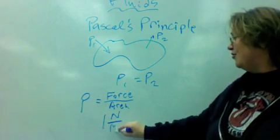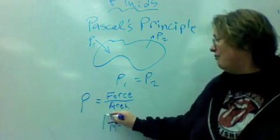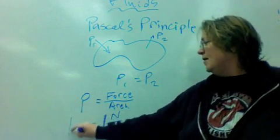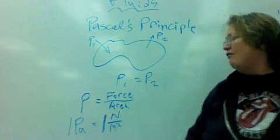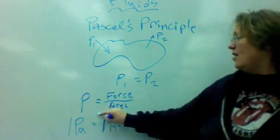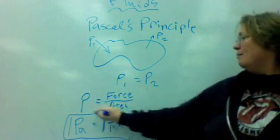Okay, now, as we often have new units, we have one here. A pascal of pressure is defined as one newton per meter squared.